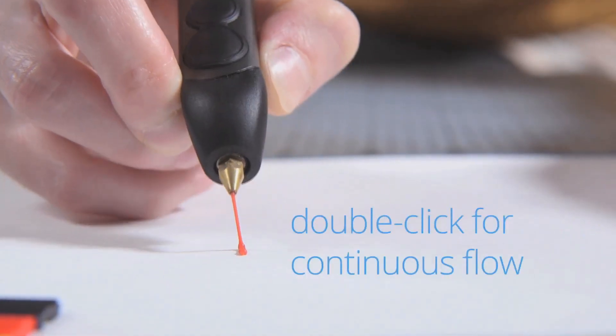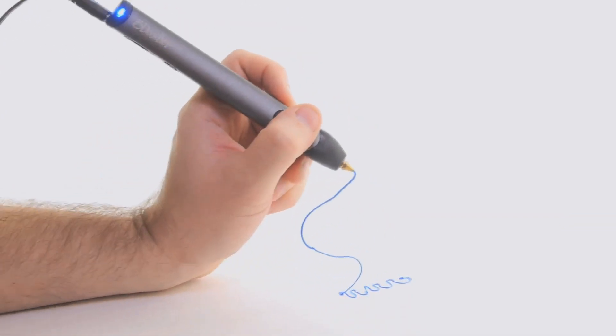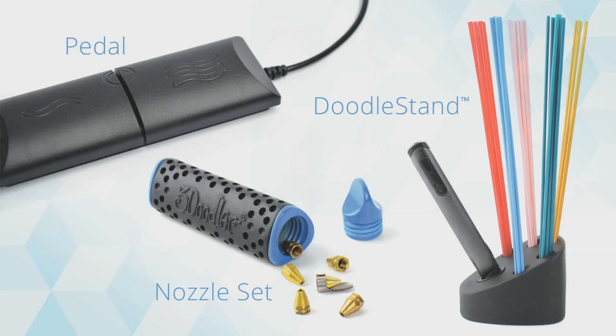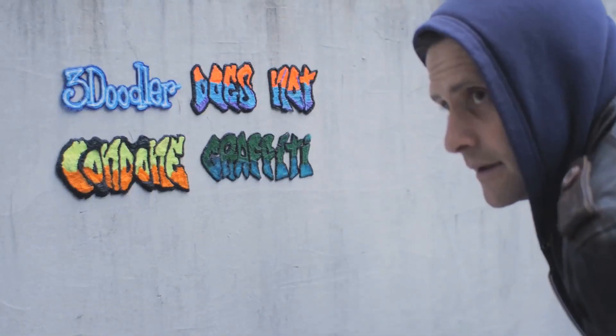The new 3Doodler is also packed with loads of enhancements, making it smoother, sleeker, and easier to use than ever before. We're also releasing exciting new accessories, including the Jetpack, a portable power pack that gives you the freedom to 3Doodle on the go.